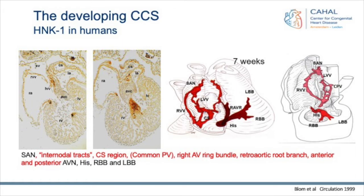That was quite a hot topic then, because you had atrial fibrillation coming from the pulmonary vein, so we suggested that maybe that had something to do with these embryonic parts. But all these structures finally disappear, and you end up with a sinus node, AV node, and His bundle.